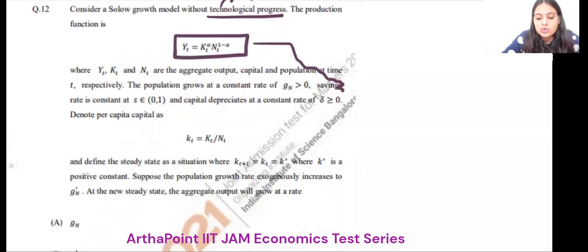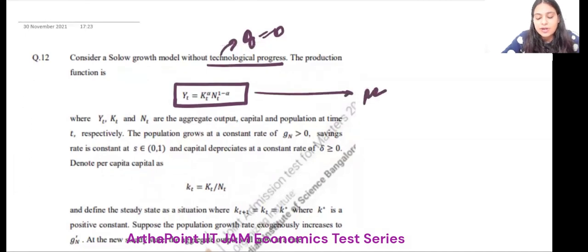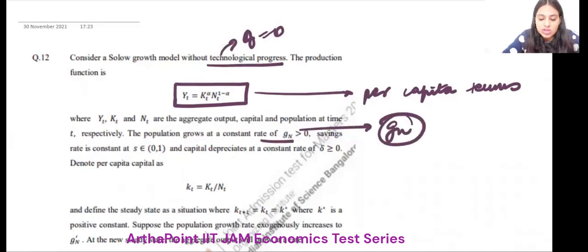Of course, you have to go ahead and convert this in the per capita terms. And Y, K, and N are aggregate output, capital and population. Population grows at the rate Gn. So it is given that the population growth rate is Gn.